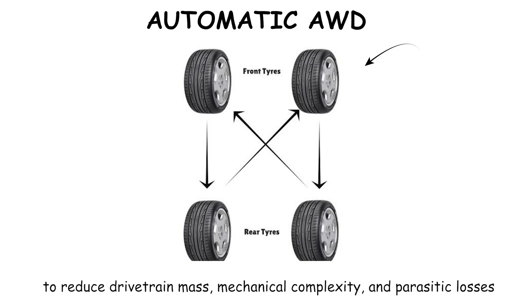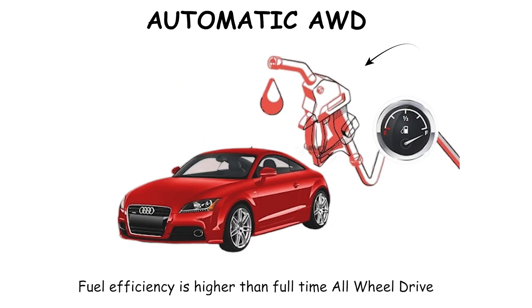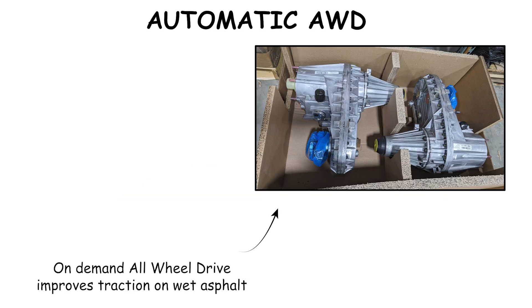These systems are commonly fitted to compact sport utility vehicles and crossovers to reduce drivetrain mass, mechanical complexity, and parasitic losses. Fuel efficiency is higher than full-time all-wheel drive because the secondary axle remains disengaged during steady cruising. On-Demand All-Wheel Drive improves traction on wet asphalt, snow, and loose gravel surfaces.